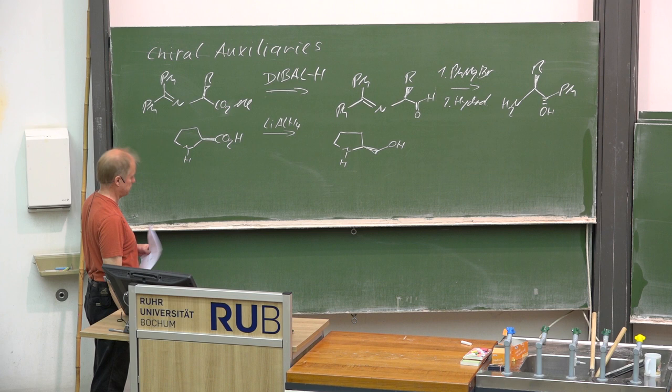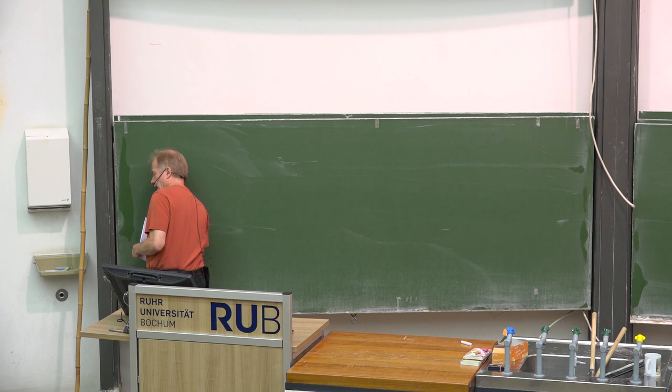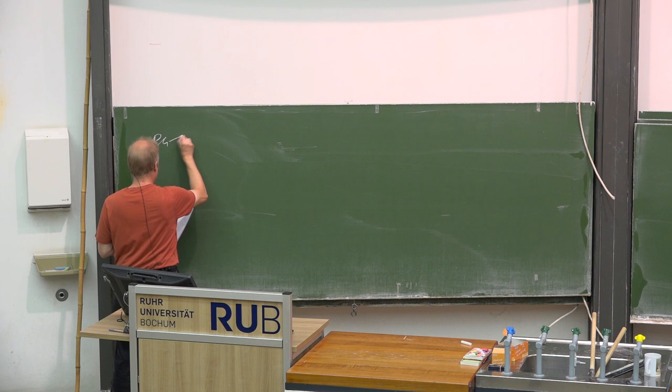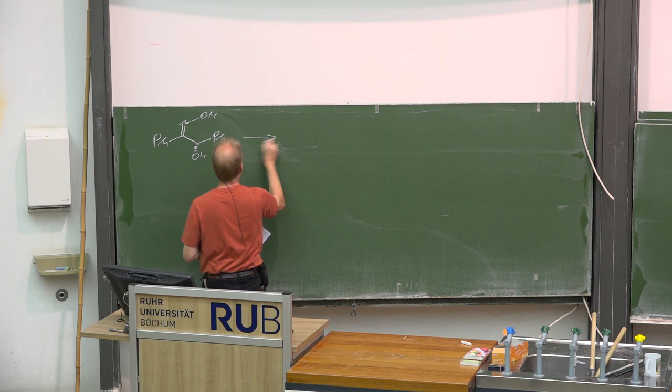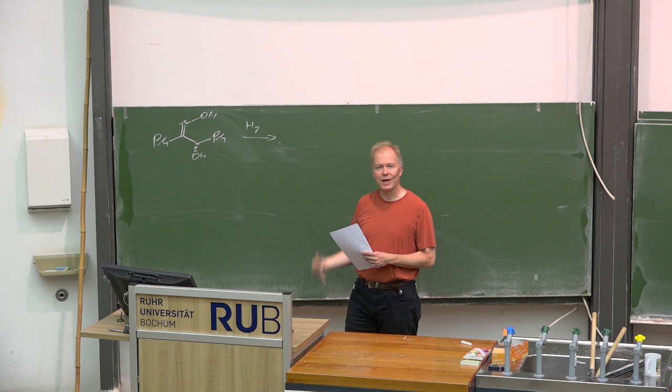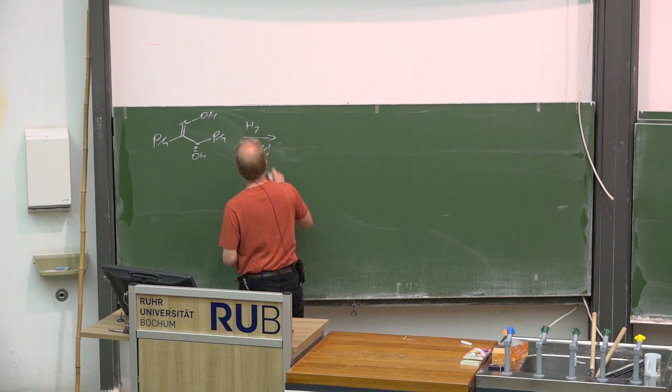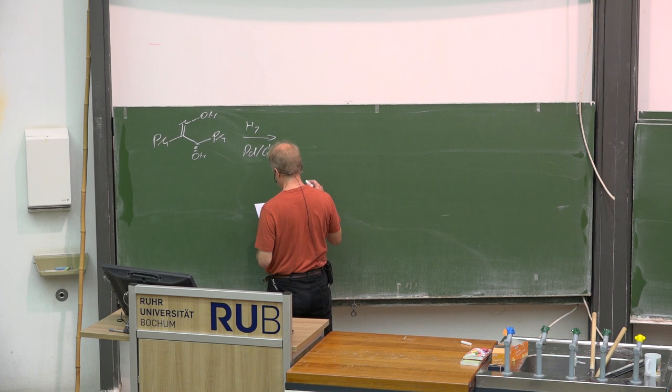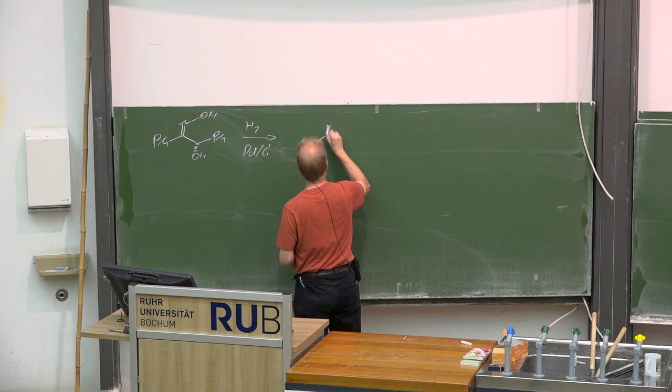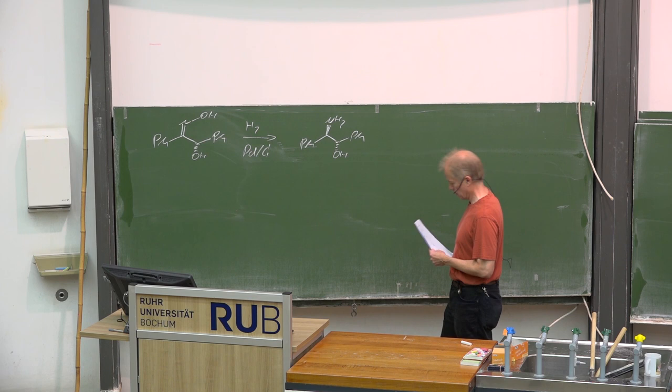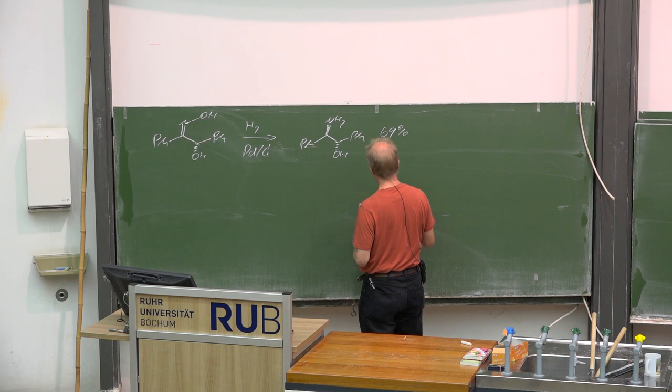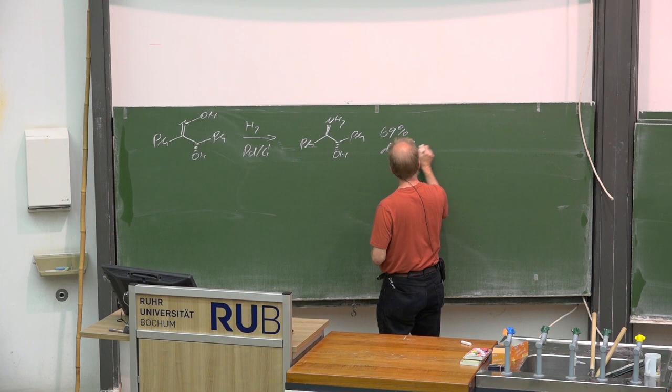Other examples: alpha-hydroxy ketones can be reduced just by hydrogenation with palladium on charcoal as the heterogeneous catalyst, and then you also achieve a transformation to that amino alcohol. In this case, 69% yield and a diastereoselectivity of 93% has been reported.